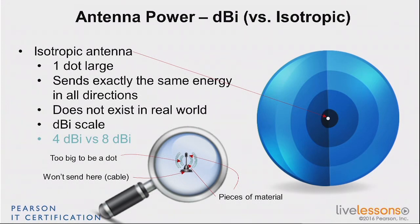It's going to be about 2.5 to 3 times more powerful. But the idea is that you can compare these two antennas together because each of them can be referenced to that reference point, which is the isotropic antenna.